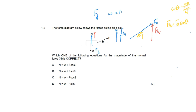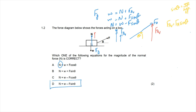Since the object is neither sinking into the ground nor lifting off, the weight force acting downward must equal the sum of the normal force and the vertical component of the applied force. Rewriting with N as the subject: N = W − F_a·sin(θ). The correct answer is option D, because gravity is balanced by both the normal force and the vertical component of the applied force.